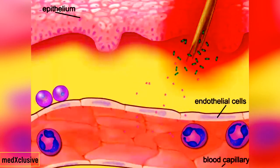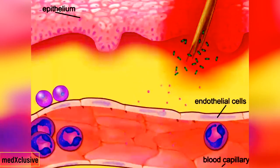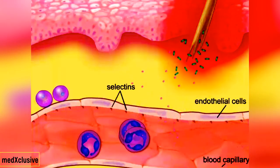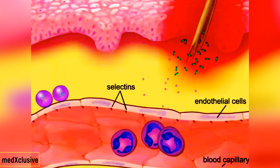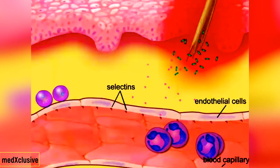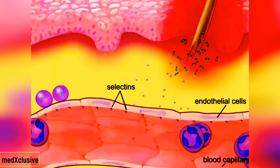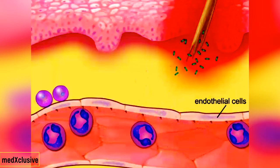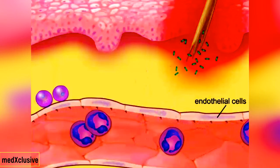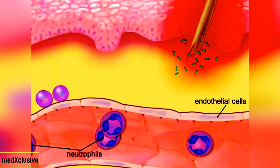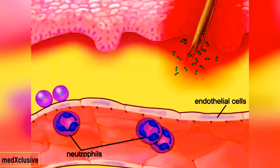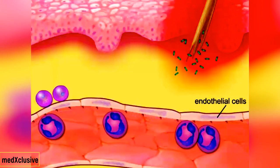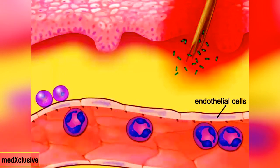Within the capillaries, adhesion molecules called selectins are displayed on the activated endothelial cells. These adhesion molecules attract neutrophils, slow them down, and cause the neutrophils to roll along the endothelium.